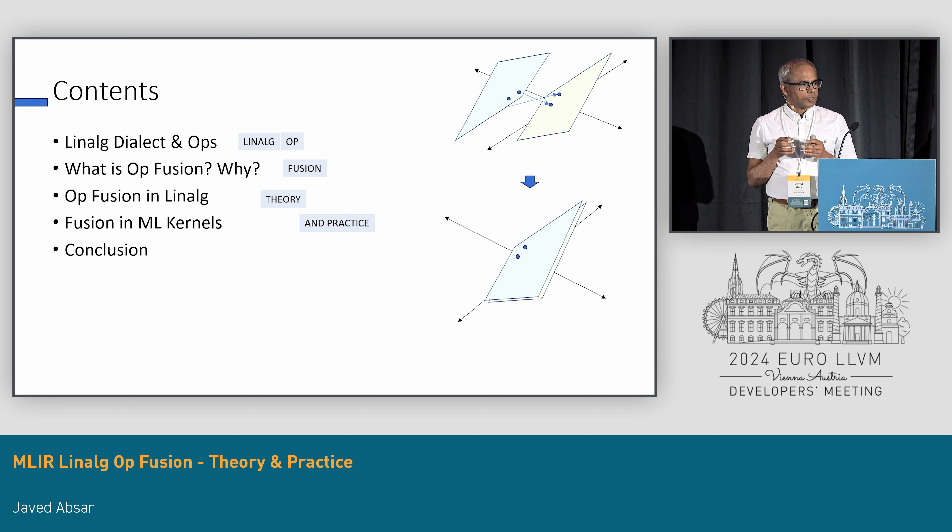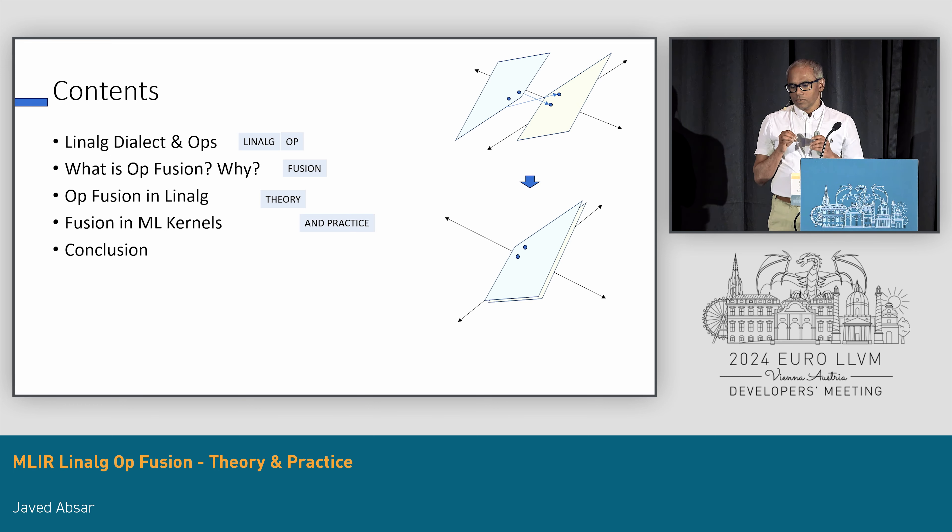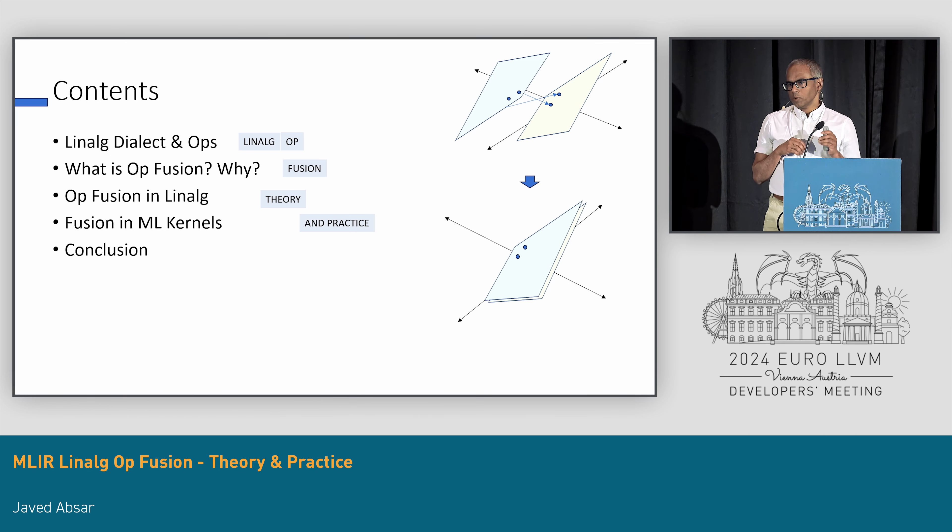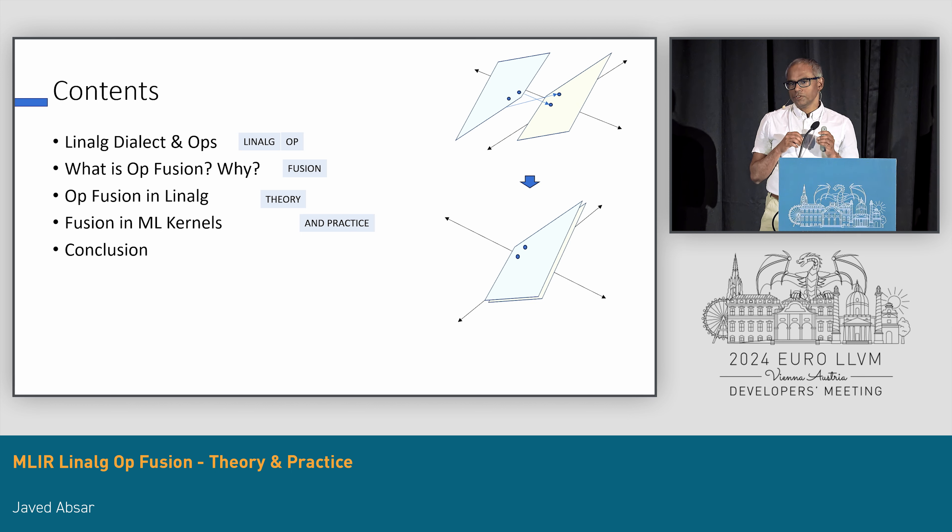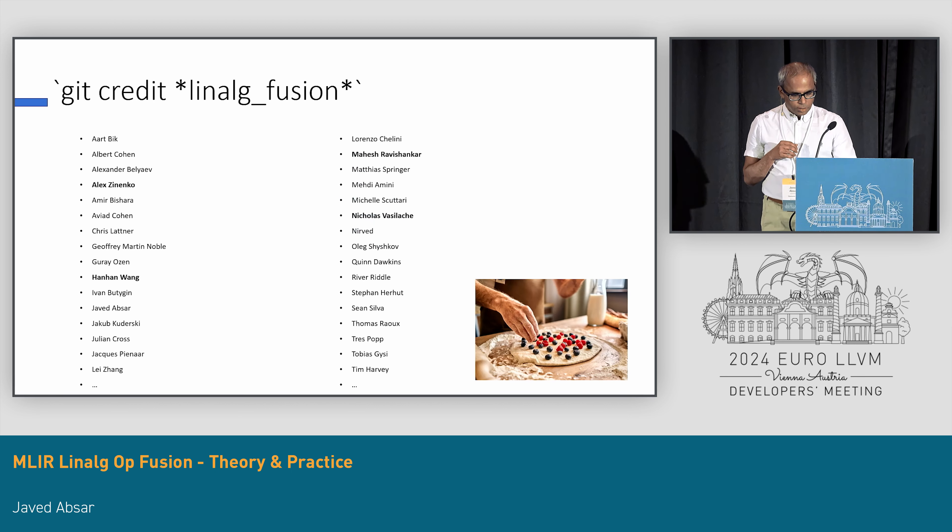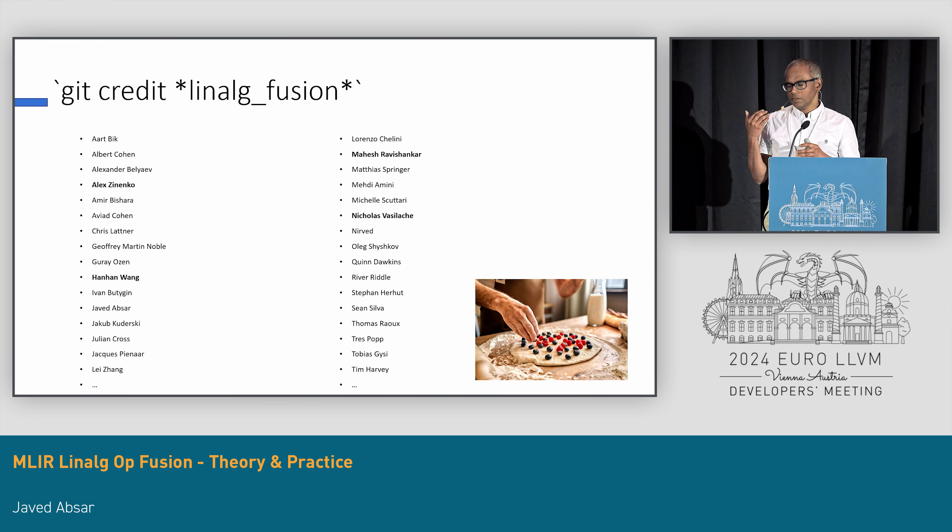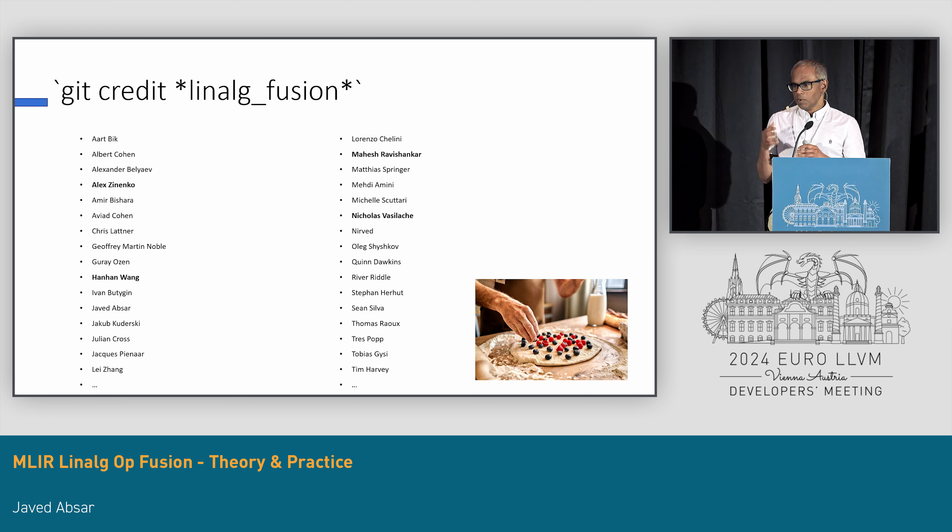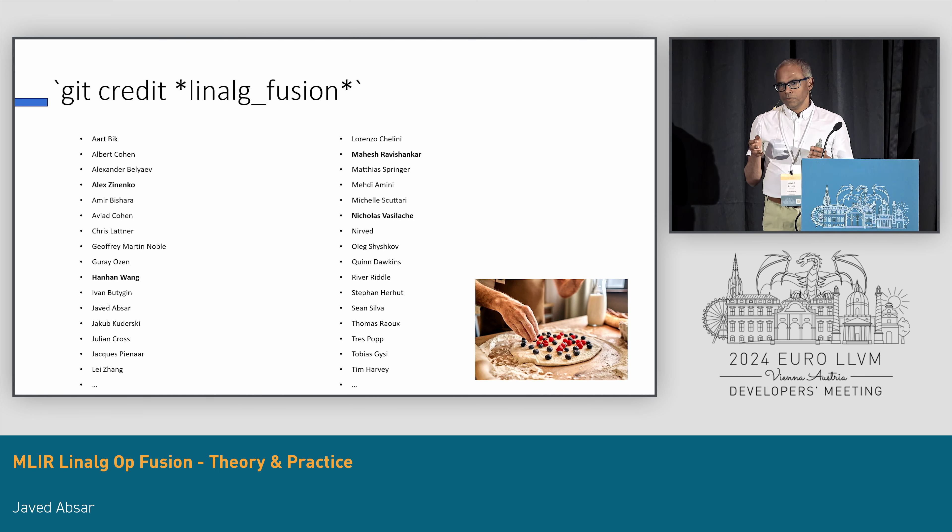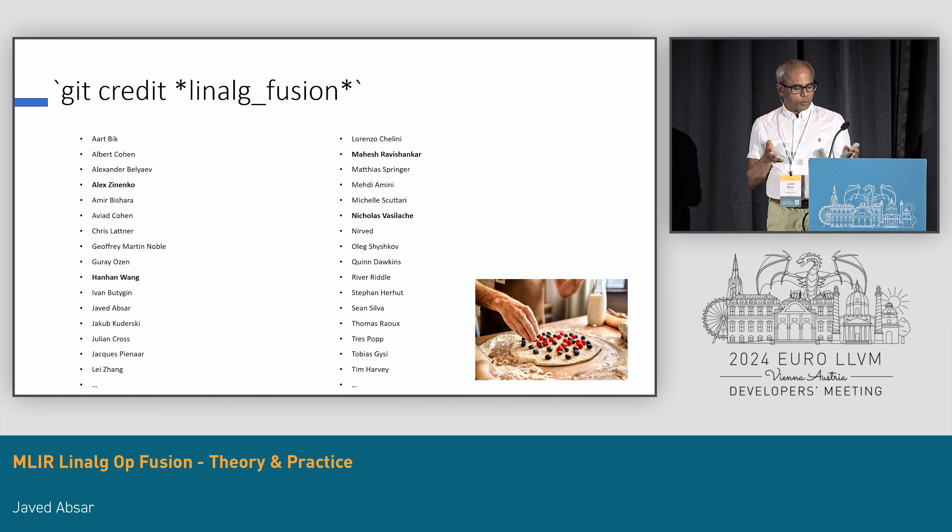Most importantly for ML kernels, what does it mean? What is great about Linalg-fusion? What's lacking? What's the future work? First thing first, a big thank you to all the people who have been contributing to upstream Linalg and fusion. Without their contribution, this kind of presentation wouldn't be possible.